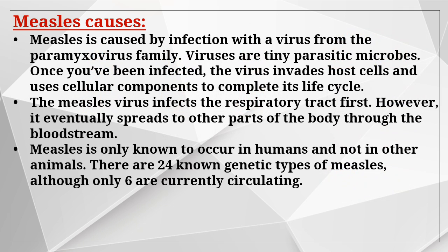Measles is caused by infection with a virus from the Paramyxovirus family. Viruses are tiny parasitic microbes. Once you have been infected, the virus invades host cells and uses their cellular components to complete its life cycle. The measles virus infects the respiratory tract first, but eventually spreads to other parts of the body through the bloodstream. Measles is only known to occur in humans. There are 24 known genetic types of measles, although only 6 are currently circulating.